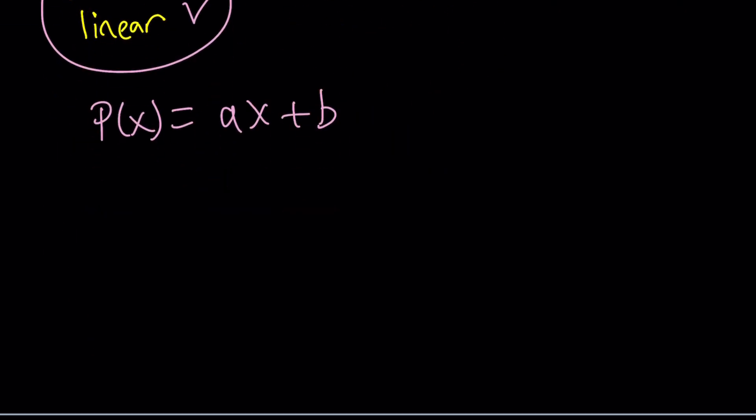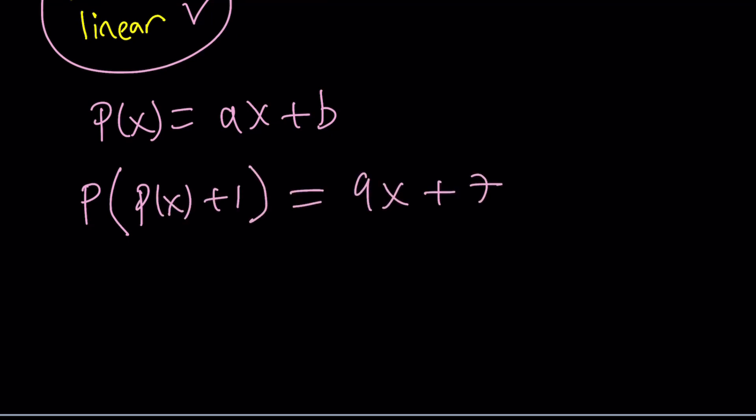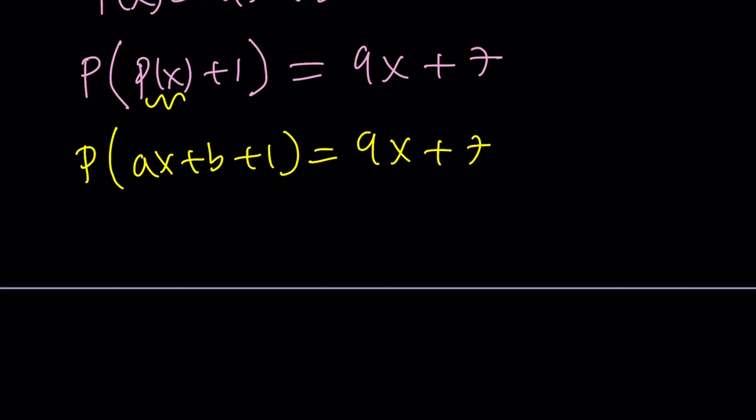Now, we're going to go back to our equation and plug this in. What was the original equation? It was P(P(x)+1) = 9x + 7. So now we can go ahead and replace P(x) with ax + b. P(ax + b + 1) = 9x + 7. Let's go ahead and arrange this a little bit. It doesn't really need arranging because it's kind of like P of this.